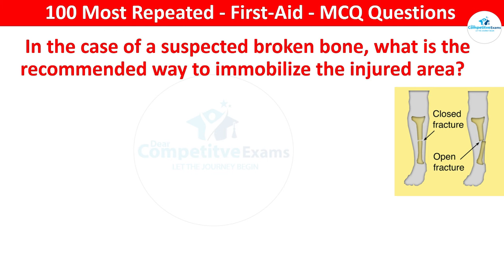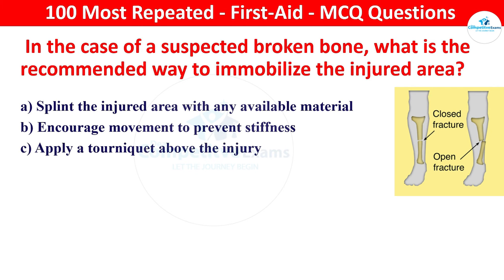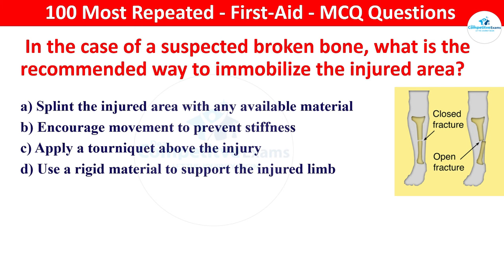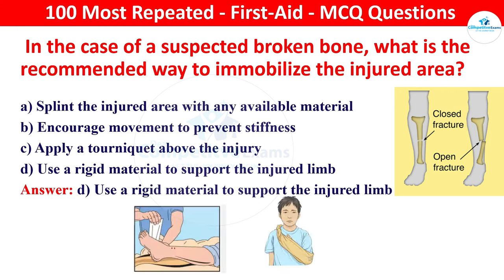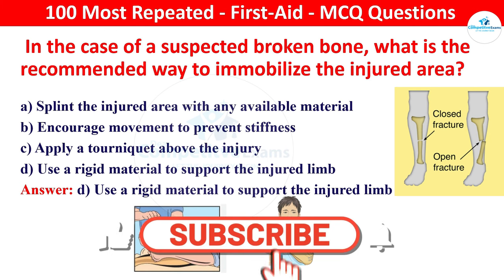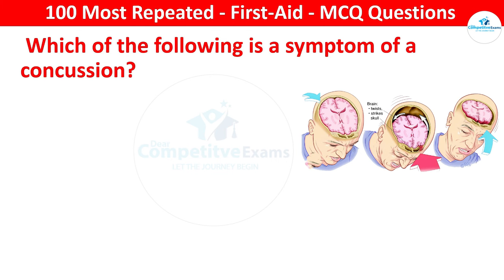Next question: in the case of a suspected broken bone, what is the recommended way to immobilize the injured area? Your options: splint the injured area with any available material, encourage movement to prevent stiffness, apply a tourniquet above the injury, or use a rigid material to support the injured limb. The right answer is use a rigid material to support the injured limb. Using a rigid material such as a board or splint helps prevent movement and further injury.